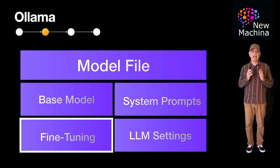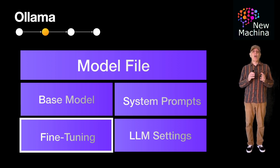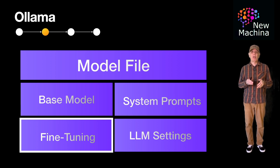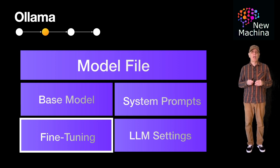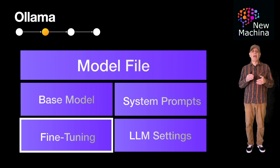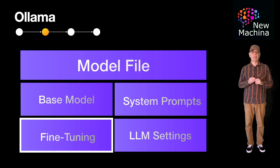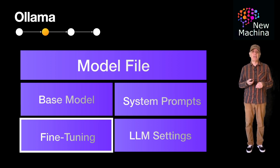Ollama doesn't support full fine-tuning of models where the model's weights are updated. However, it does offer an adapter-based fine-tuning method called Low-Rank Adaptation, or LoRA for short. LoRA is a lightweight fine-tuning method that adapts pre-trained LLMs to specific tasks without modifying the original model weights, enabling models to specialize in niche areas without full model retraining. LoRA's fine-tuning adapters can be swapped in and out, meaning multiple tasks or domains can be supported using the same base model.